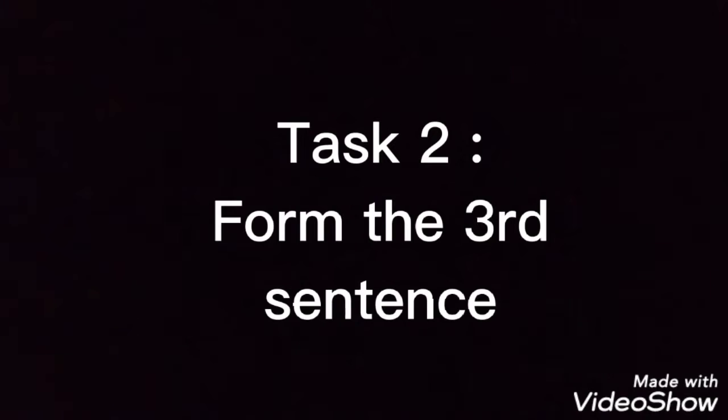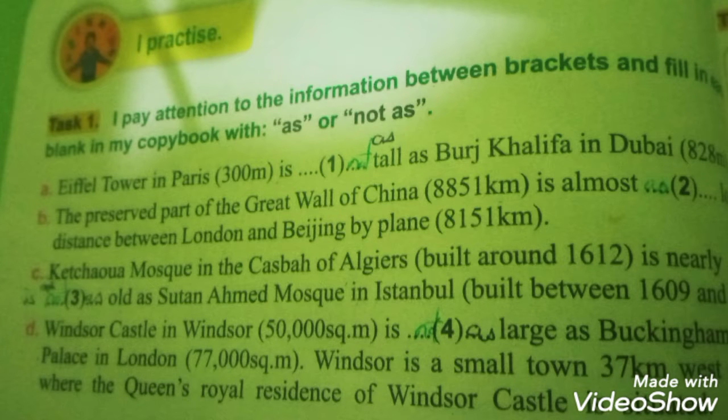We start with sentence number one, task one. A: The Eiffel Tower in Paris is [as] tall as the Burj Khalifa in Dubai. We are going to look at the numbers — the meter or nothing — from your options. So we say: is not as tall.